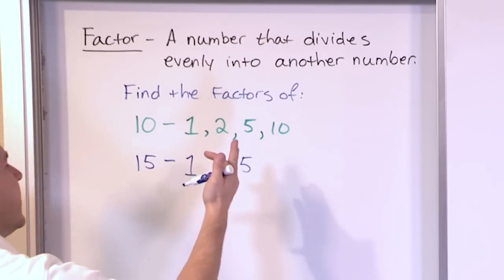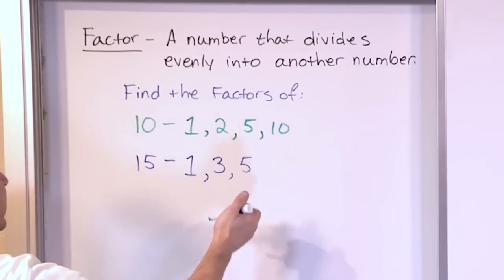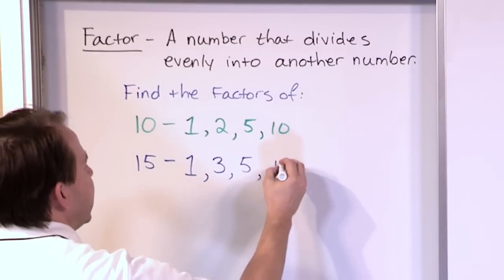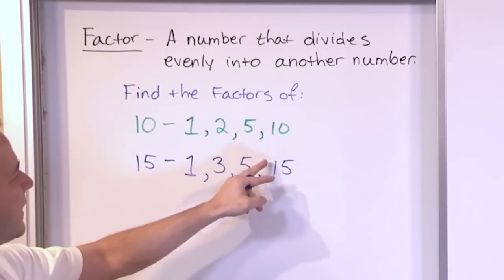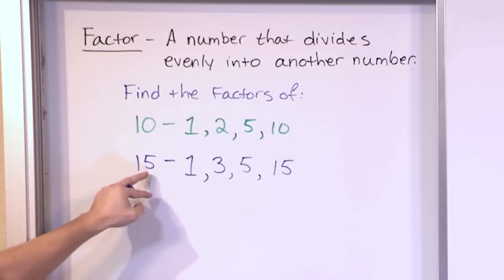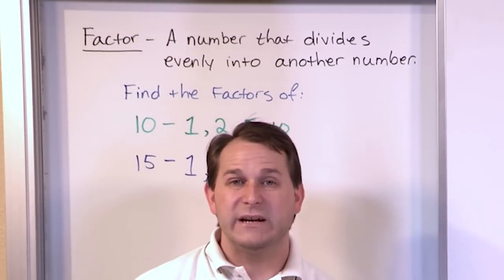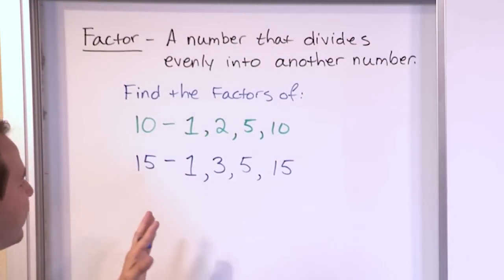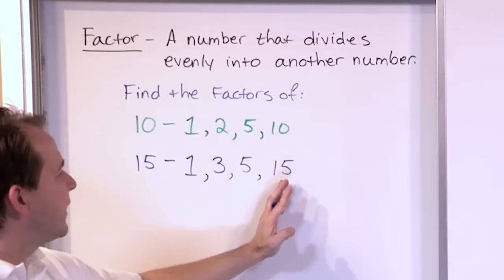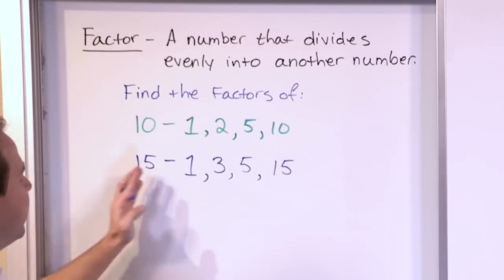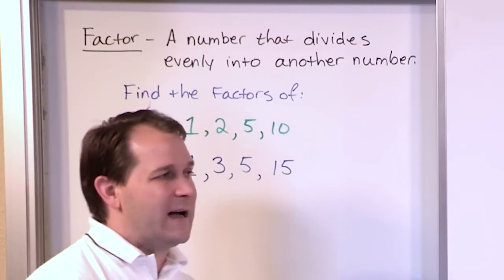Then you just keep going through: is 6 a factor? Is 7? Is 8? Is 9? And so on. The only other factor you're going to get is 15 itself, because numbers like 9, 10, 11, and 12 don't divide into 15 a whole number of times. So the factors of 15 show that 1 is always a factor, the number itself is always a factor at the end since 15 divided by 15 is 1, and then you have a few numbers in the middle that divide evenly.